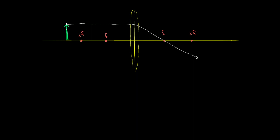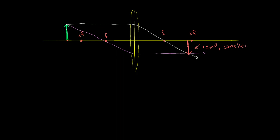Now we'll do another ray — the incident ray goes through the left focal point, and when it gets refracted it will now be parallel. So the light from that point of the object will converge right over here. Doing this for every point on the object, the image shows up here. It's a real inverted image — it was pointing up before, now it's pointing down — and in this situation it's actually smaller than the original. It's a real, smaller, inverted image.